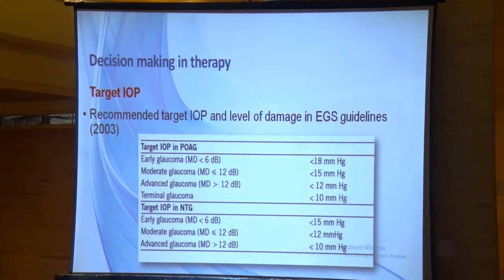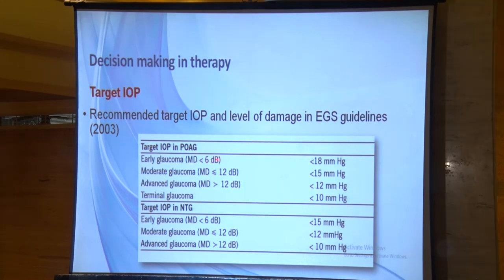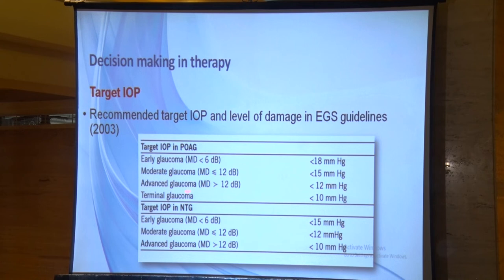Once we are sure about our diagnosis and need to start treatment, the first step is establishing a target intraocular pressure. In early glaucoma — mean deviation less than 6 dB — the target IOP should be in the higher teens, around 18 mmHg. In moderate glaucoma with deviation around 12 dB, target the middle teens. In advanced glaucoma — mean deviation more than 12 dB — target lower teens. In terminal glaucoma, target single-digit IOP. In NTG, we need to lower the target further.